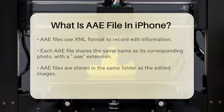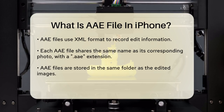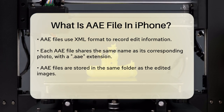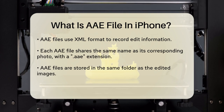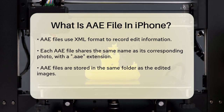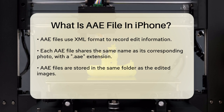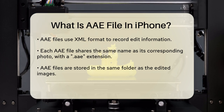Here's how it works. When you edit a photo, the original image remains untouched. Instead, the edits are saved in the AAE file in an XML format. This way, you can always revert back to the original photo if you need to. The AAE file has the same name as the original photo, but with the .AAE extension, and it's stored in the same folder as the image.